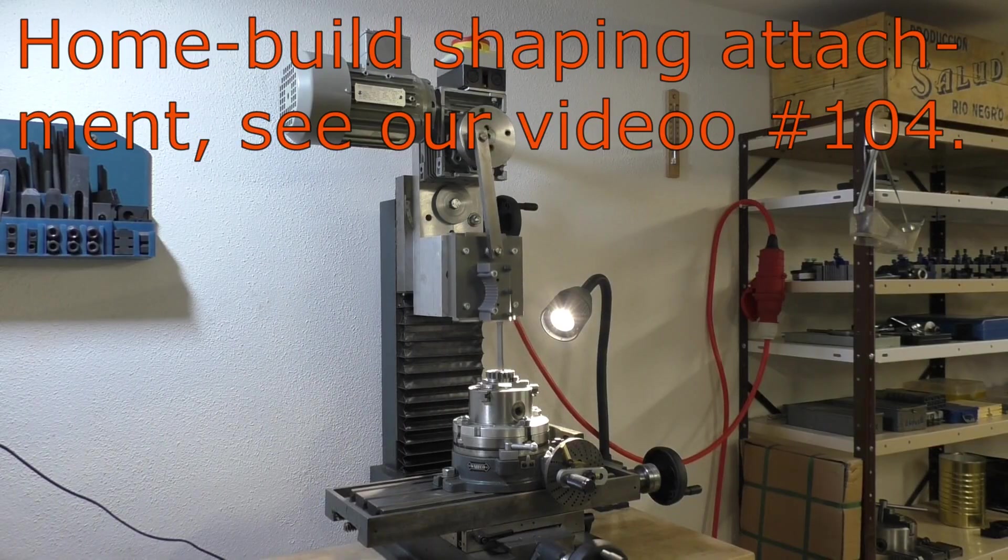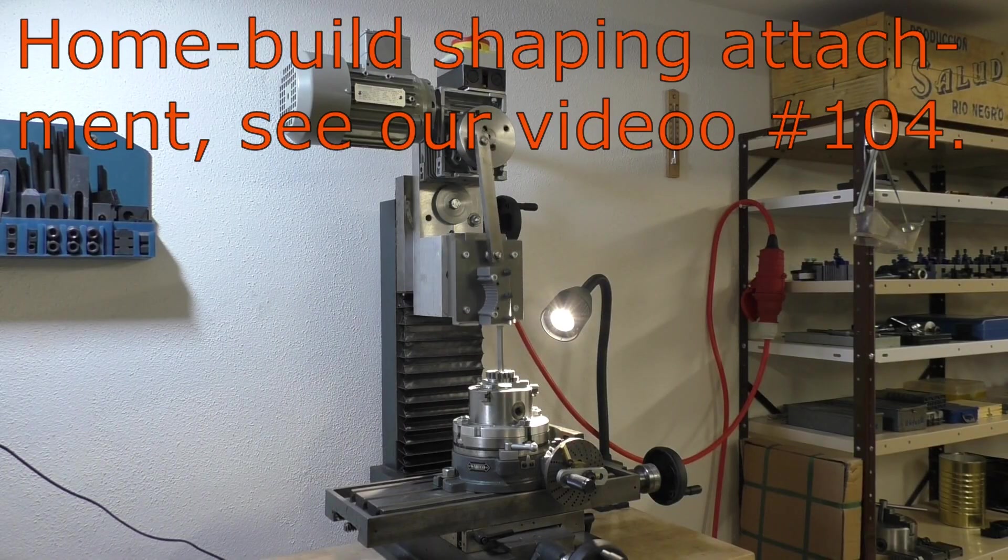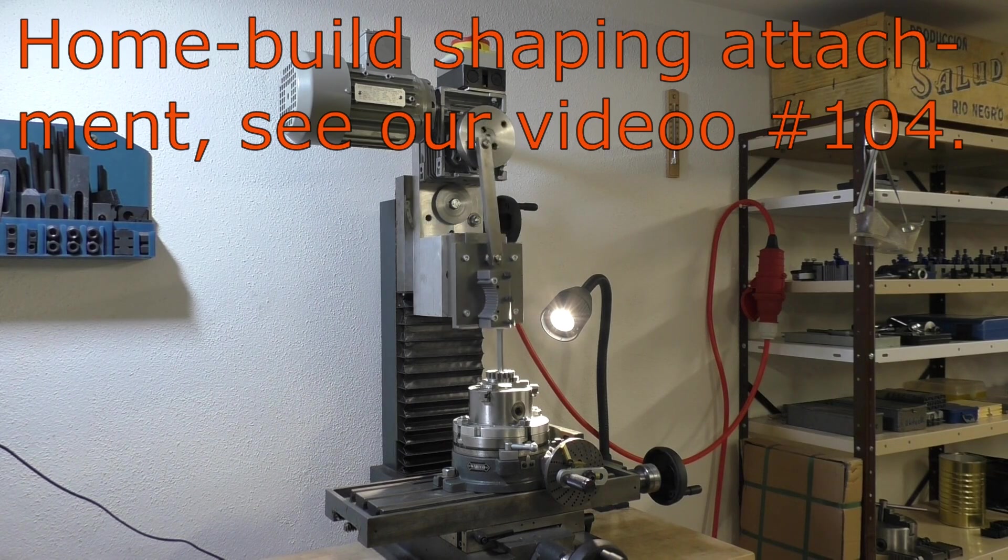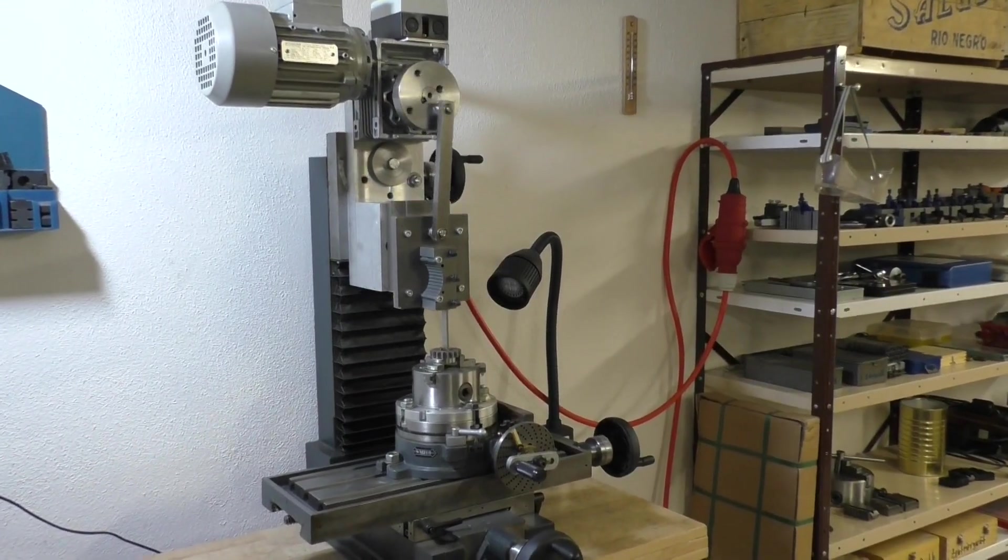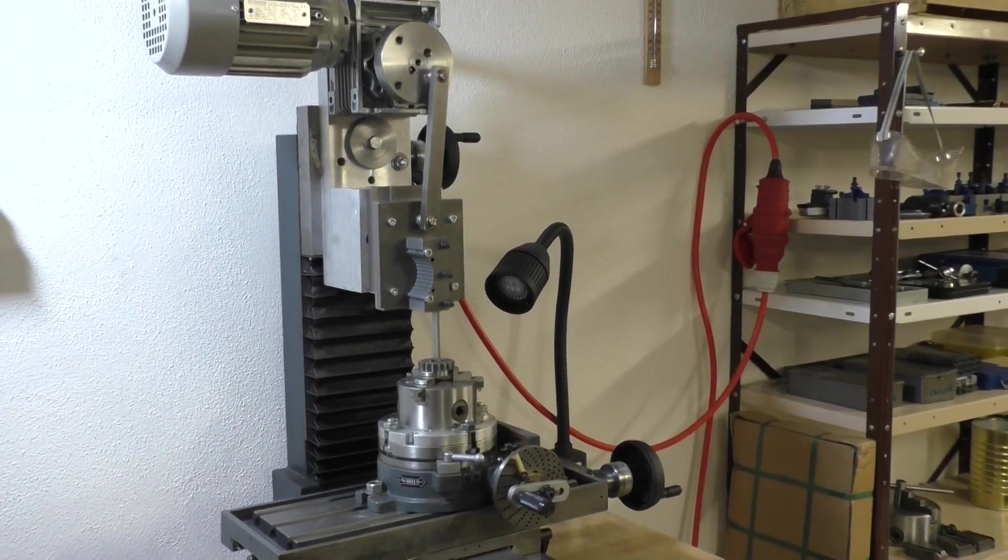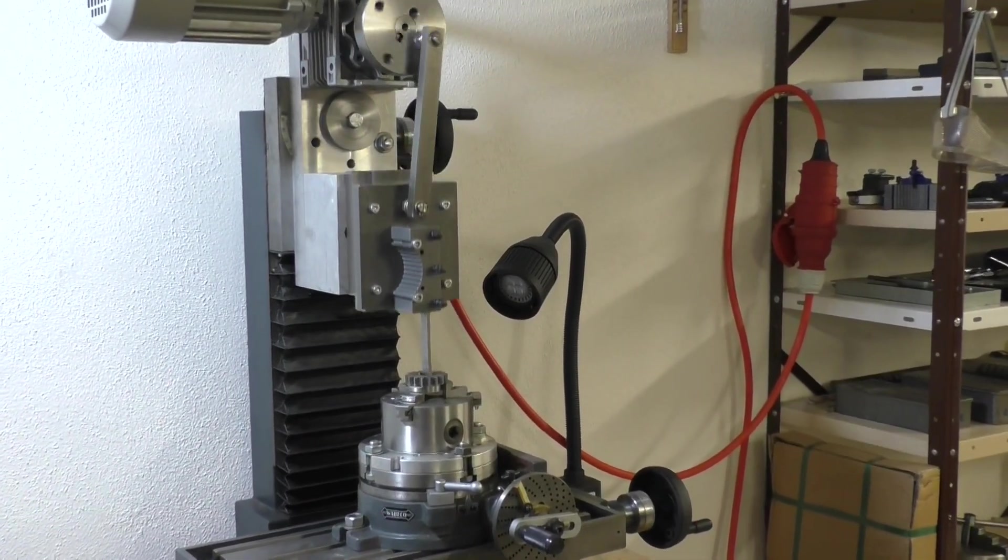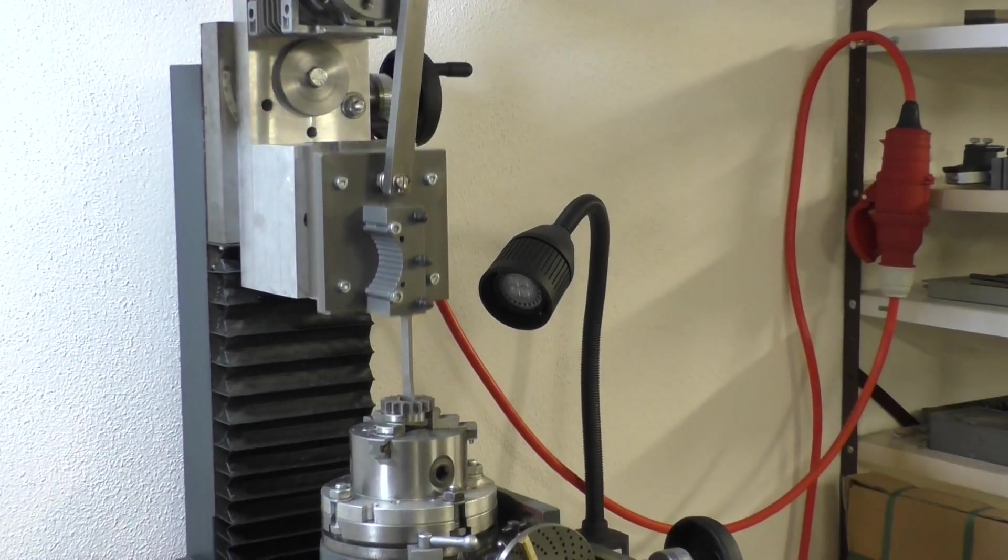Now we are working with a self-made shaping attachment. See our video 104, which is attached to a Wabeco milling machine F1200. For some milling machines there are such shaping attachments to buy, if not, just build it yourself.